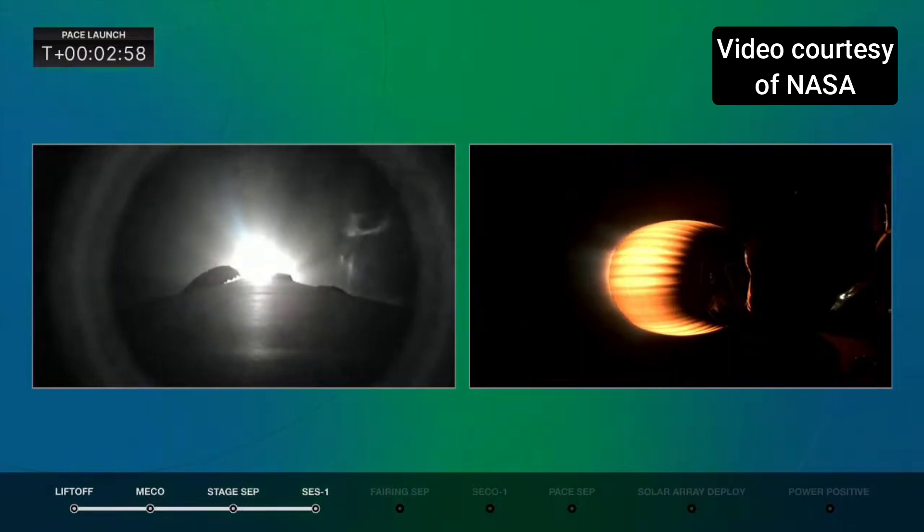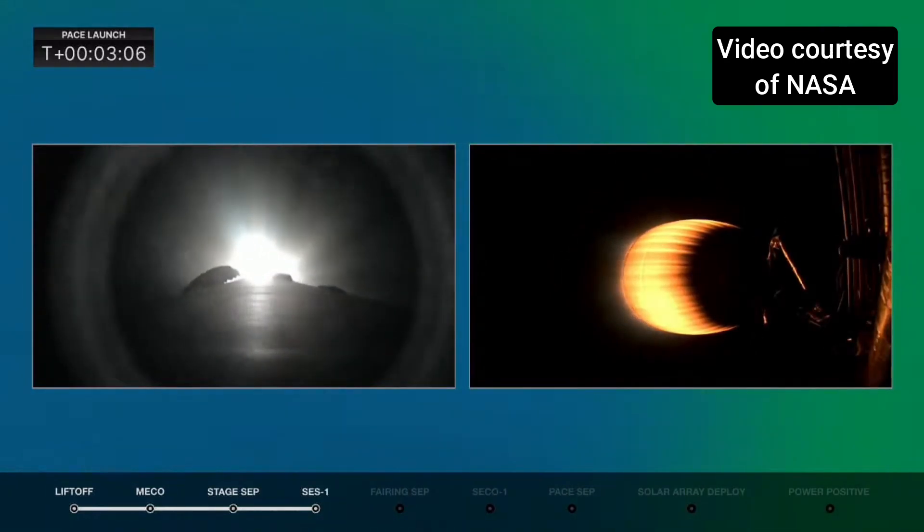If you're here on the Space Coast and you're watching, get ready for a double thunder clap at just about T plus 7 minutes, 7 to 8 minutes. The double sonic booms of the first stage booster breaking the sound barrier as it returns to Earth.